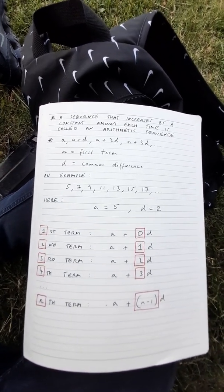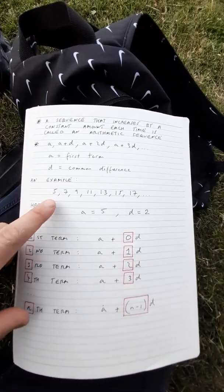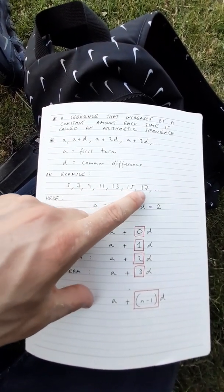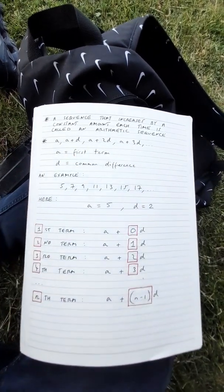An example of an arithmetic sequence is 5, 7, 9, 11, 13, 15, 17 and so on.